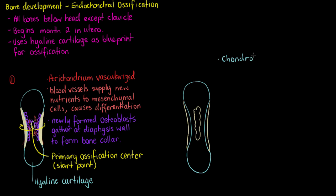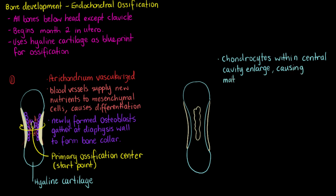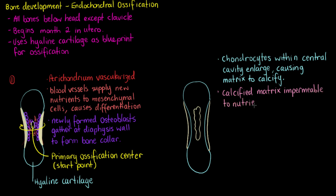In this second phase of endochondral ossification, the formation of the bone collar will cause chondrocytes that remain within that central cavity to enlarge and send a signal to the surrounding cartilage to calcify. Chondrocytes are the cells responsible for building the initial hyaline blueprint. This calcification causes impermeability toward the inner portion of that developing bone, with cells no longer receiving the nutrients they need for survival.